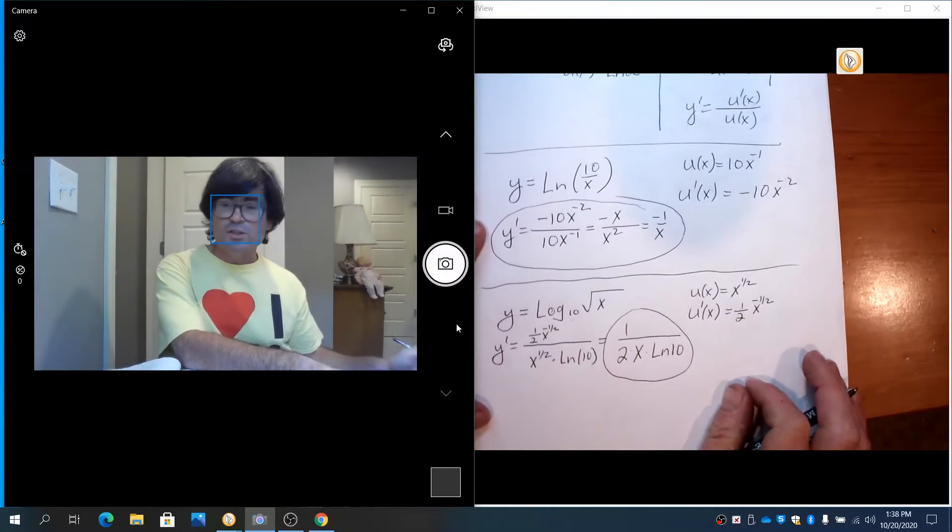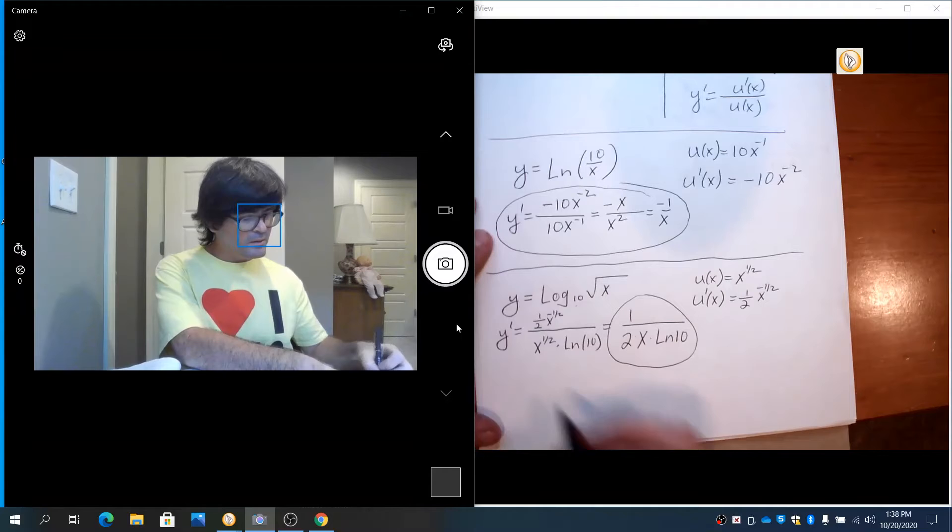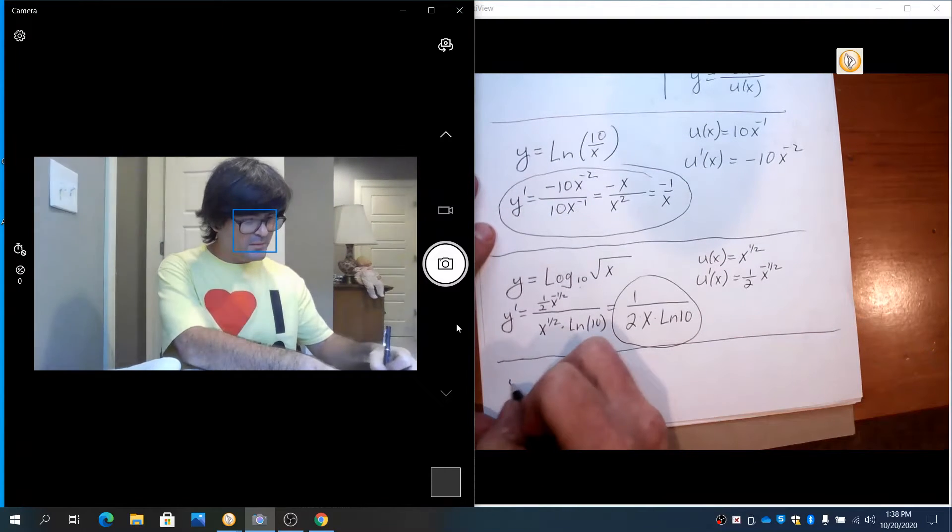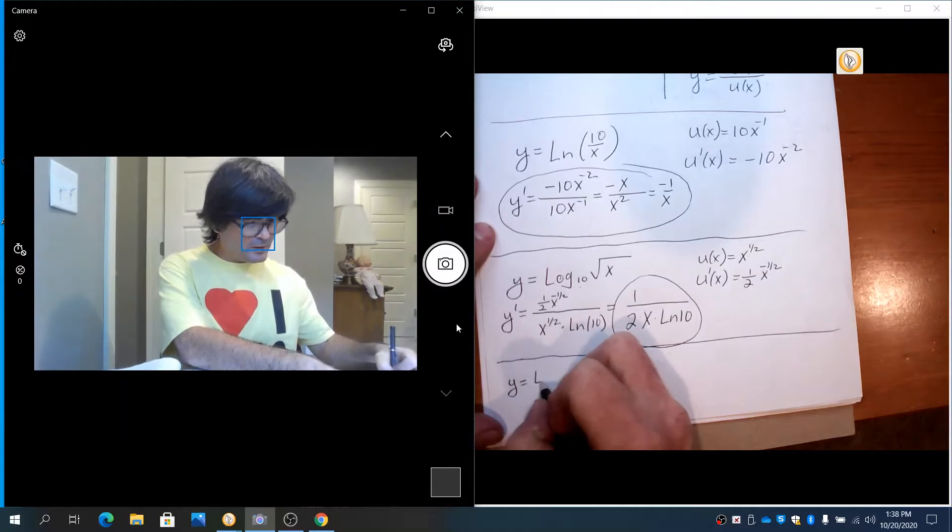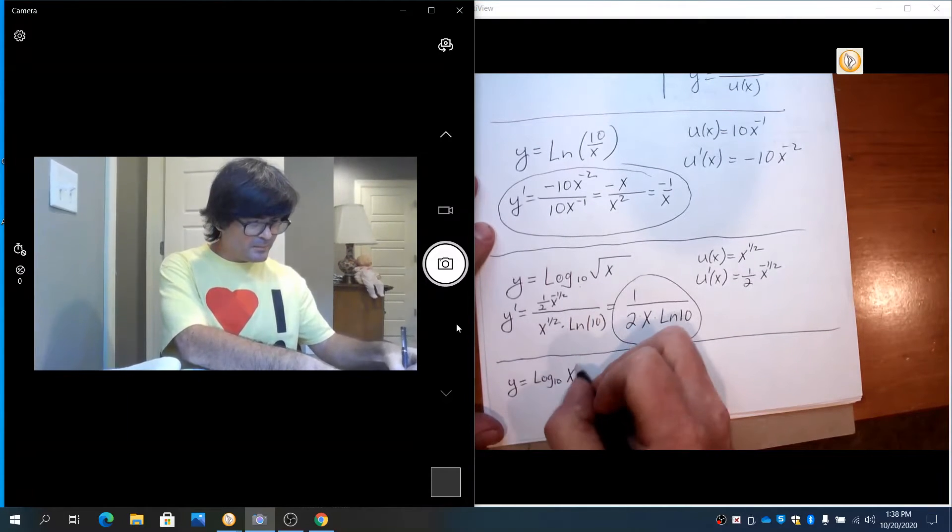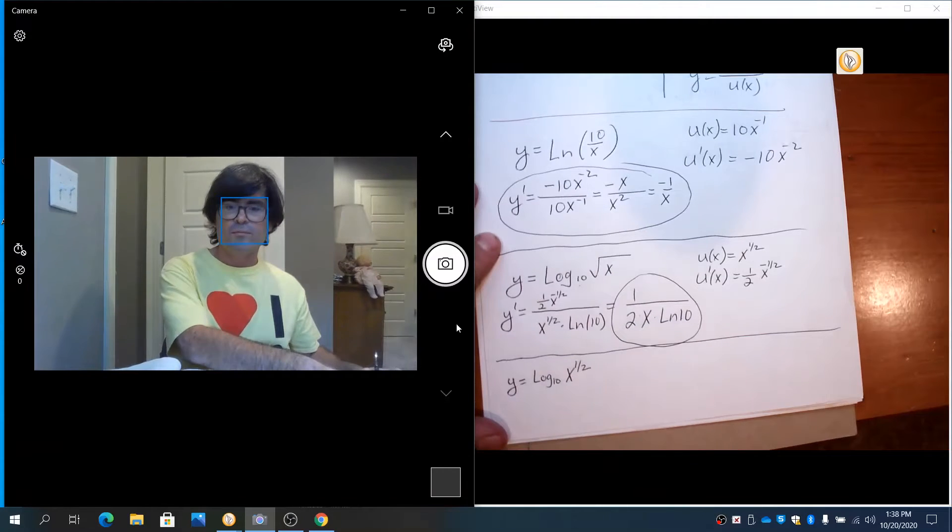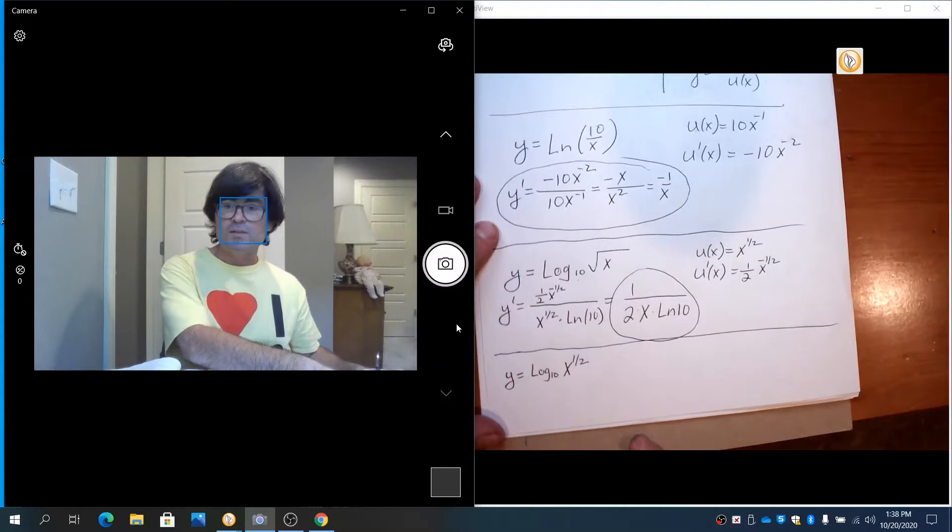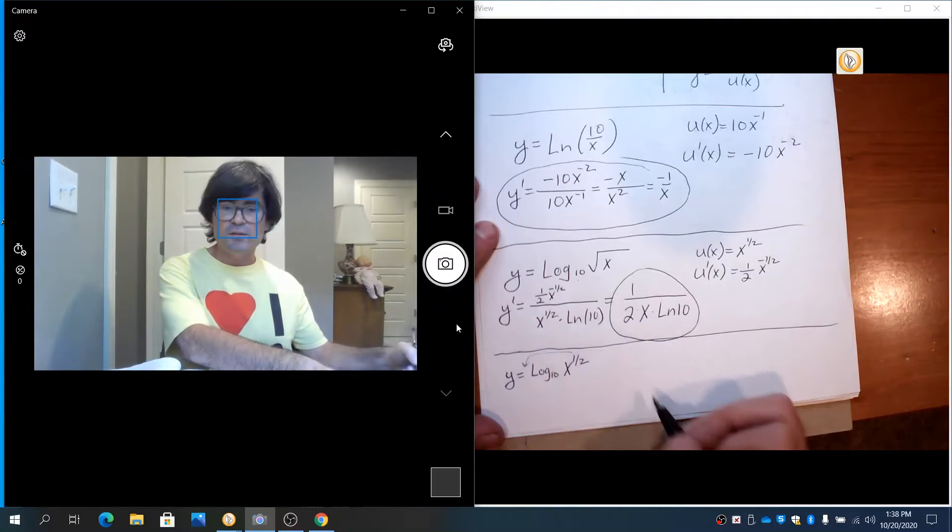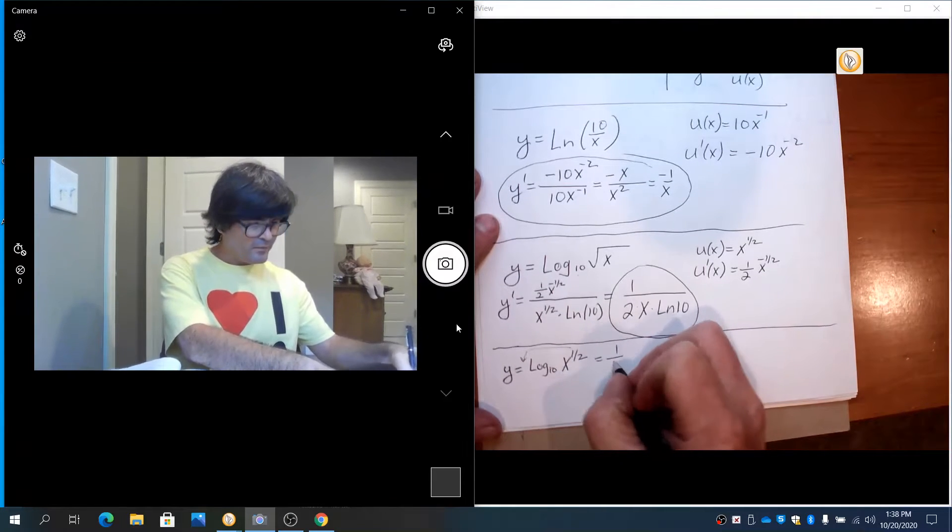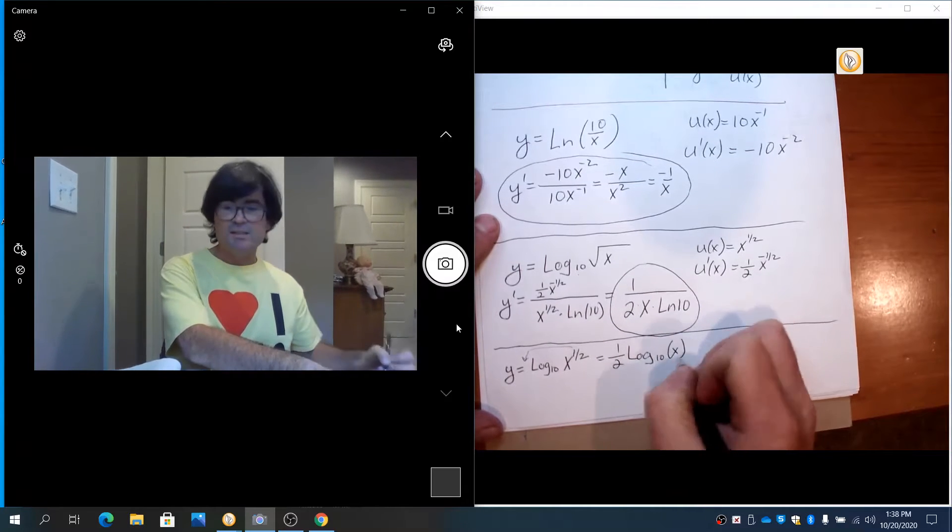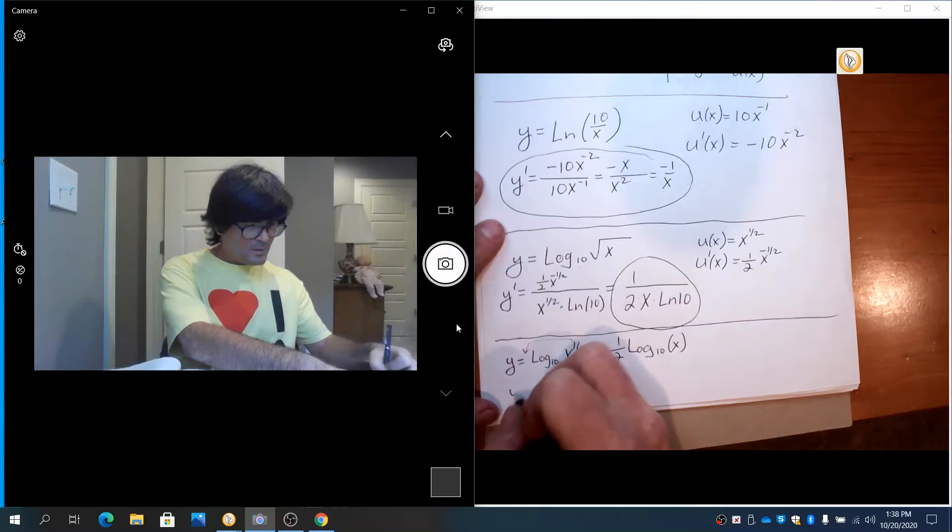Now I said I wanted to show you this one more time. I want to do this using the properties of exponents and by simplifying it first. If you have log base 10 of the square root of x, it's the same as log base 10 x to the 1 half. And from your log properties from just basic algebra, this 1 half can come down as a coefficient. So really this is 1 half log base 10 of just x.